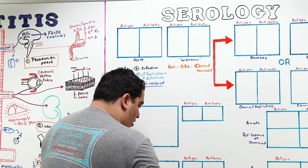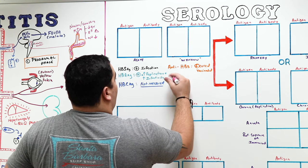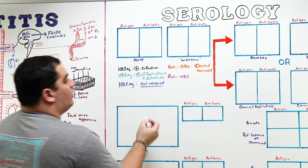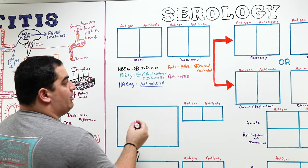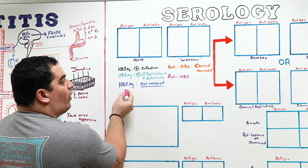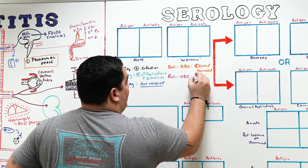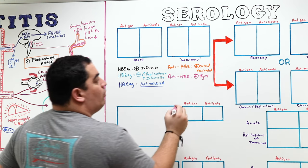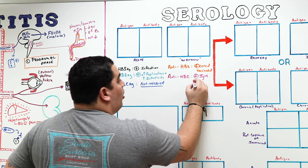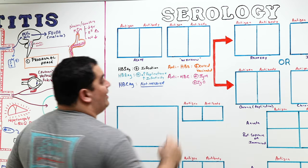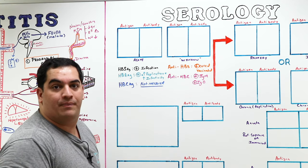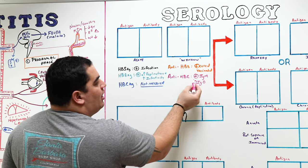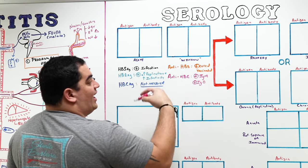The next antibody is Anti-HBc — the core antibodies directed against the core antigen. If these are positive, they can be of two types: IgM, which means it is an acute infection, or IgG, which means it is a chronic infection. Positive IgM means acute infection; positive IgG means chronic infection.